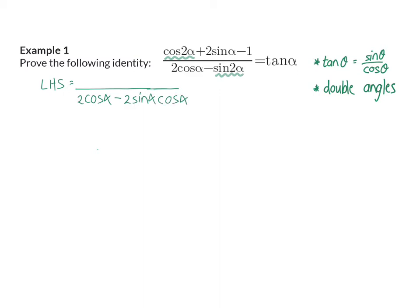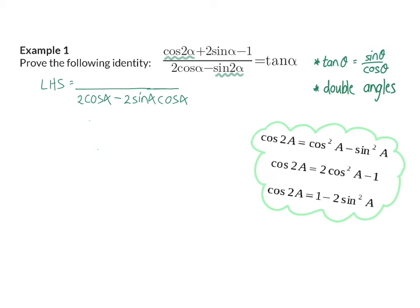Now focusing on the numerator, I have cos 2α, and for cos 2α we have three options of identities to use. Therefore, I focus on the rest of the numerator, which only has sin α, and I'm going to choose the identity that has sin in it. So cos 2α will be changed to 1 minus 2 sin² α.